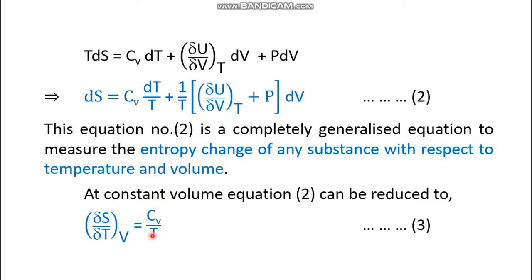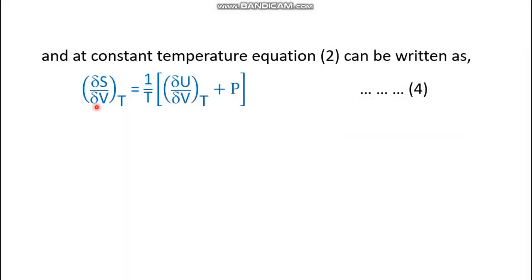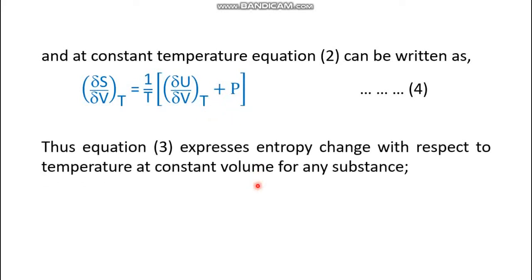If temperature is kept constant, the first term vanishes and dV moves to the left-hand side, giving a partial differentiation at constant temperature. This yields equation four: (∂S/∂V)_T = (1/T)(∂U/∂V)_T + P. Equation three expresses entropy change with respect to temperature at constant volume, and equation four expresses entropy change with respect to volume at constant temperature, both for any substance.